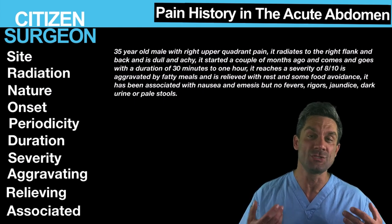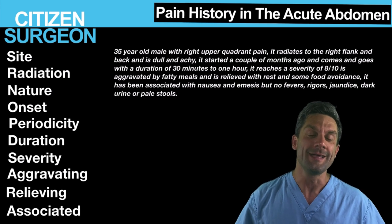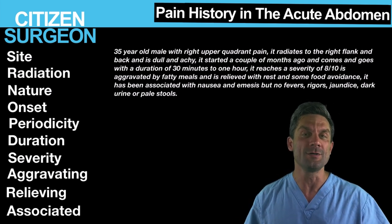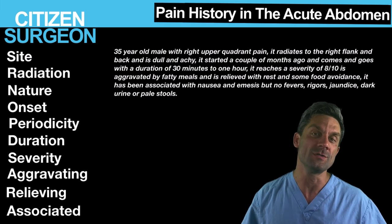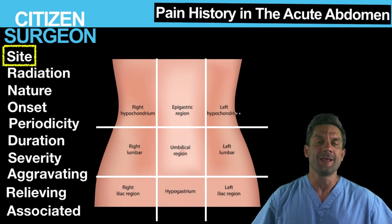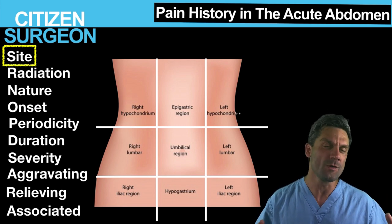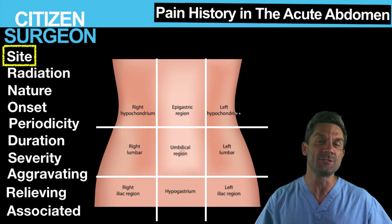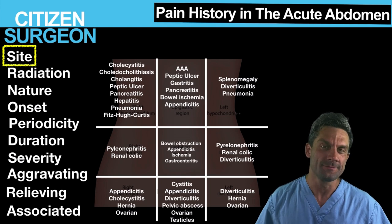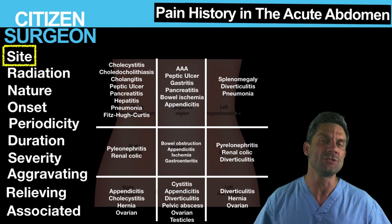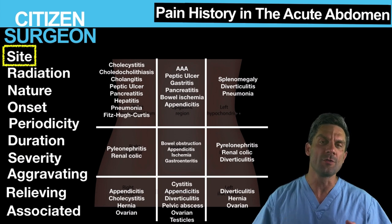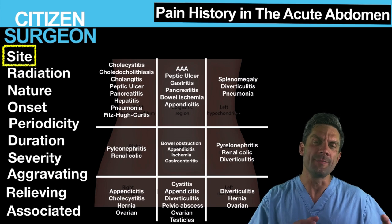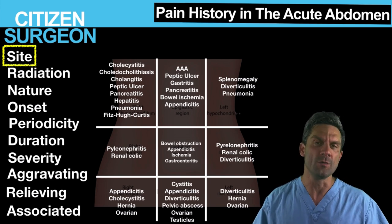S is for site. Why is site important? There are nine quadrants in the abdomen and each quadrant will have particular organs or referred pain that give you an idea of the underlying condition. Later in the talk we'll go through each of these regions and discuss what you should be worried about when a patient comes in with pain in a particular area. Moving on to radiation — this will be a familiar image. Pain radiating to the right shoulder could be a perforated duodenal ulcer. Pain down the left shoulder and left arm — think myocardial infarction.